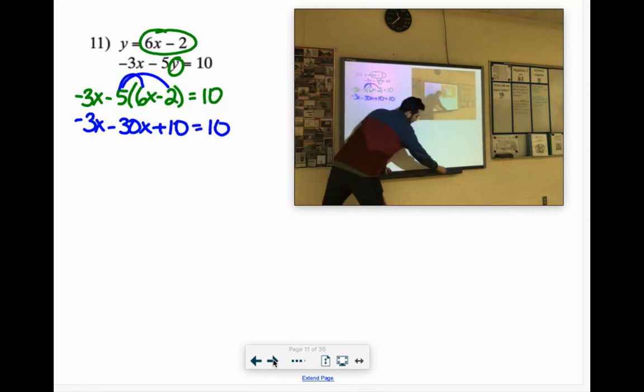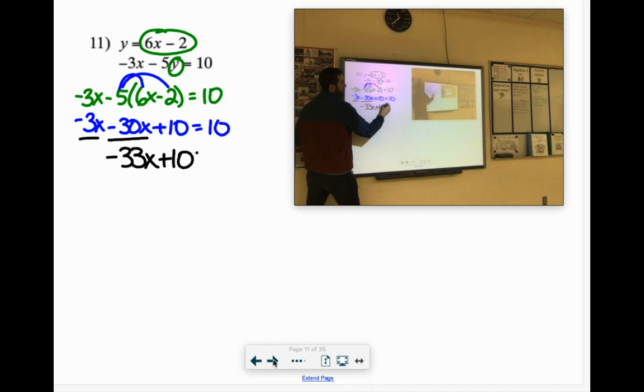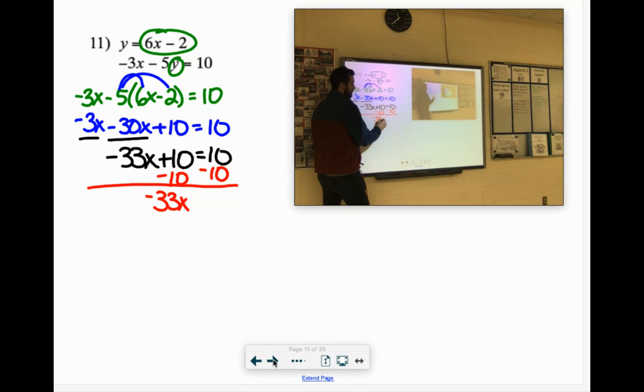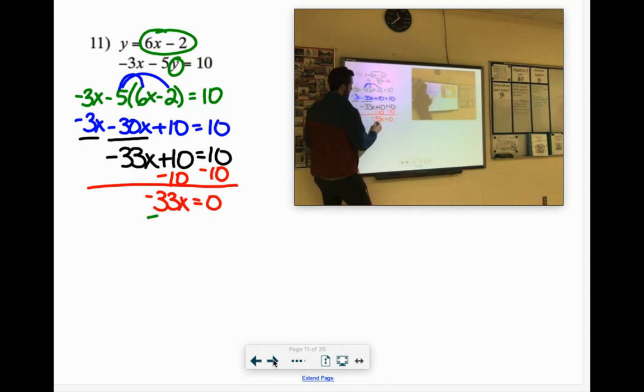Okay? If we combine our like terms, negative 3x, negative 30x is negative 33x, plus 10 equals 10. Oh, how do we get rid of plus 10? Minus 10. Negative 33x equals 0. If we divide that by negative 33, what's 0 divided by anything? Yes. 0. Good job.